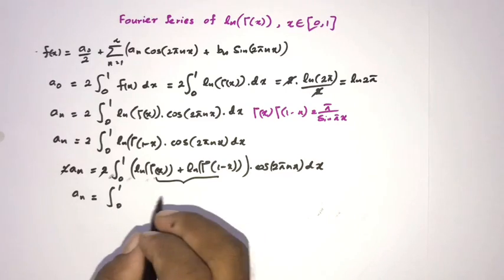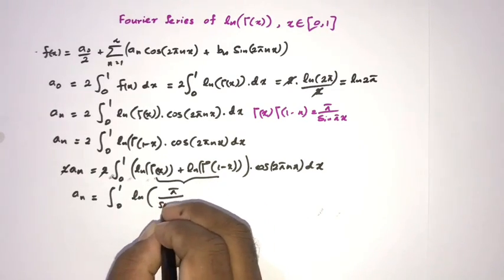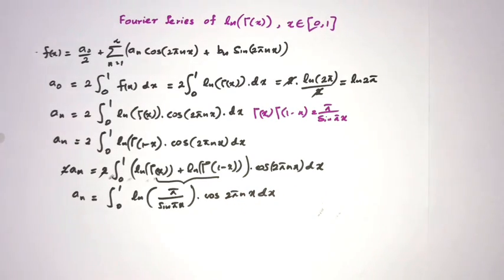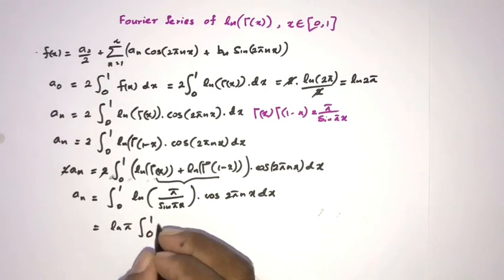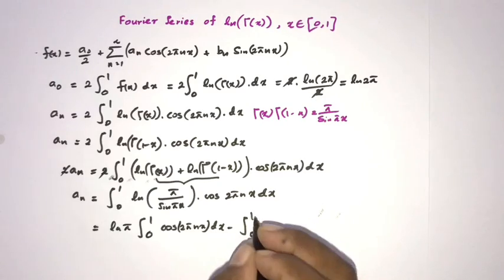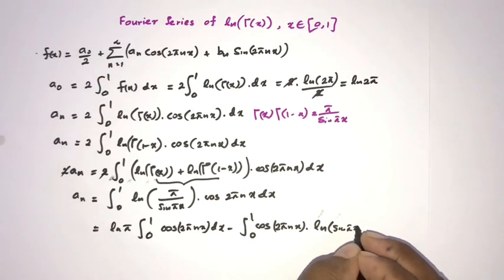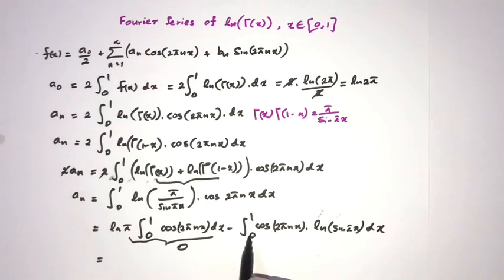The two's cancel, so aₙ = ∫₀¹ ln(π/sin(πx))·cos(2πnx) dx. Applying the division rule of logarithms, this becomes ln(π)·∫₀¹ cos(2πnx) dx minus ∫₀¹ cos(2πnx)·ln(sin(πx)) dx.